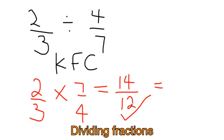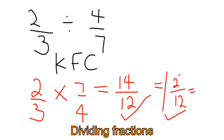This is correct, but because it's a top-heavy fraction we've got to simplify it. We find how many lots of 12 are in 14 — just one. That leaves 2 remaining (14 minus 12), so we can simplify: halving 2 and halving 12 gives us 1 over 6.